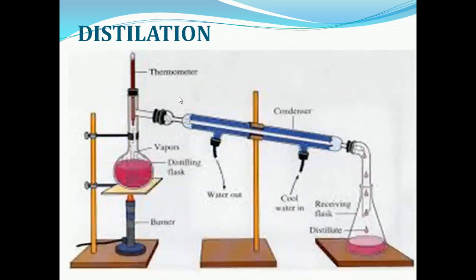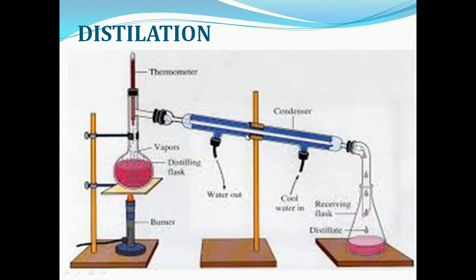In this picture you can see the distillation apparatus used for the distillation process. The mixture is heated in a flask and the liquid in the flask evaporates and is collected in another beaker through the condenser. With the help of the condenser the liquid is collected in another beaker, and the solid particles are left behind in the flask.